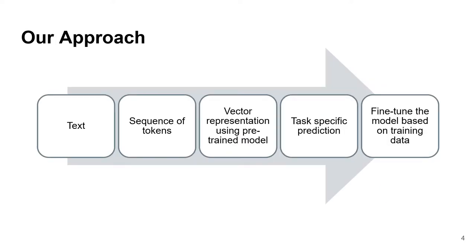Our approach is basically the classic NLP approach. We take the text, we tokenize it into a sequence of tokens, then these tokens are represented using a vector representation and we do task-specific prediction. Instead of training this model from scratch, we initialize it with the weights of a pre-trained model trained on a language modeling task and then fine-tune it using this dataset.